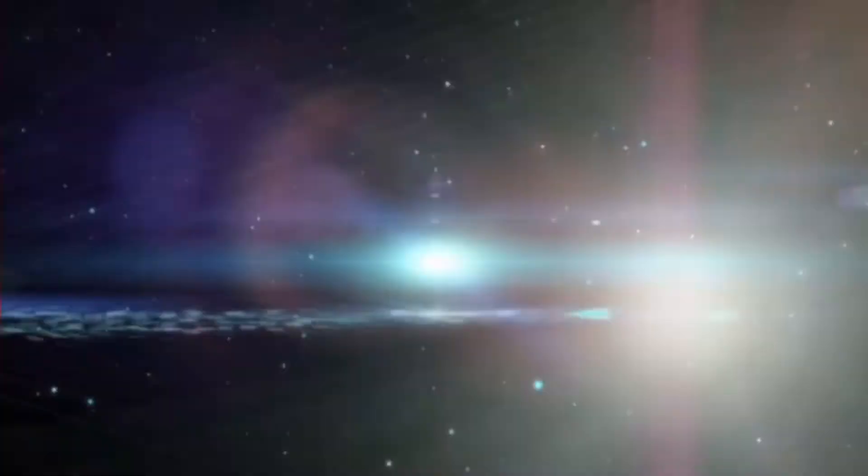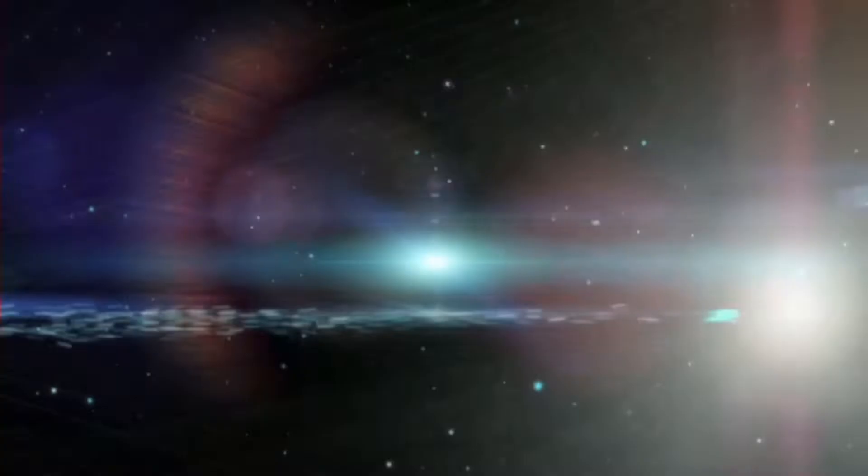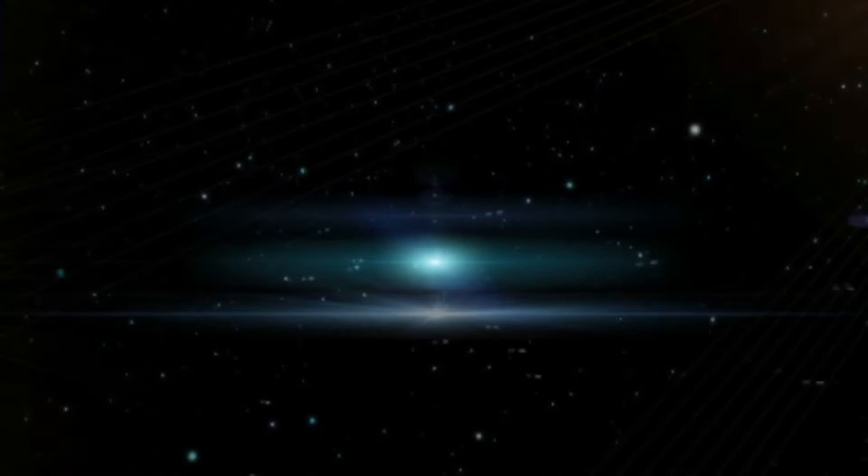Supernova 1987A in the Large Magellanic Cloud Galaxy at a distance of 170,000 light years was observed optically on February 24, 1987. It was the first supernova visible with the bare eye since Kepler's supernova in 1604.